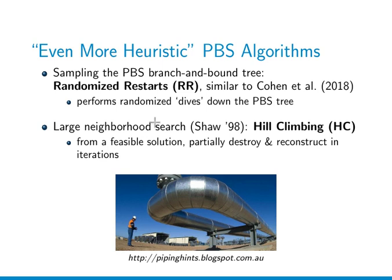We also looked at two additional heuristics. One is randomized restarts, which is sampling of the conflict tree — we perform randomized dives down the tree iteratively. The other is large neighborhood search, which we call hill climbing: we take a feasible solution and then reconstruct some part of it, with various versions of how a feasible solution can be reconstructed.